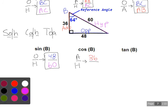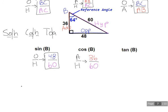Tangent, O over A, right? So opposite divided by adjacent for tangent. For the reference angle 64, the opposite is going to be 48, and the adjacent is going to be 36. Cool.